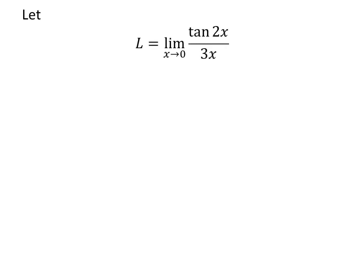Let us assume L is the limit of tangent of 2 times x upon 3 times x as x approaches 0. We know tangent of 2 times x is equal to sine of 2 times x upon cosine of 2 times x.